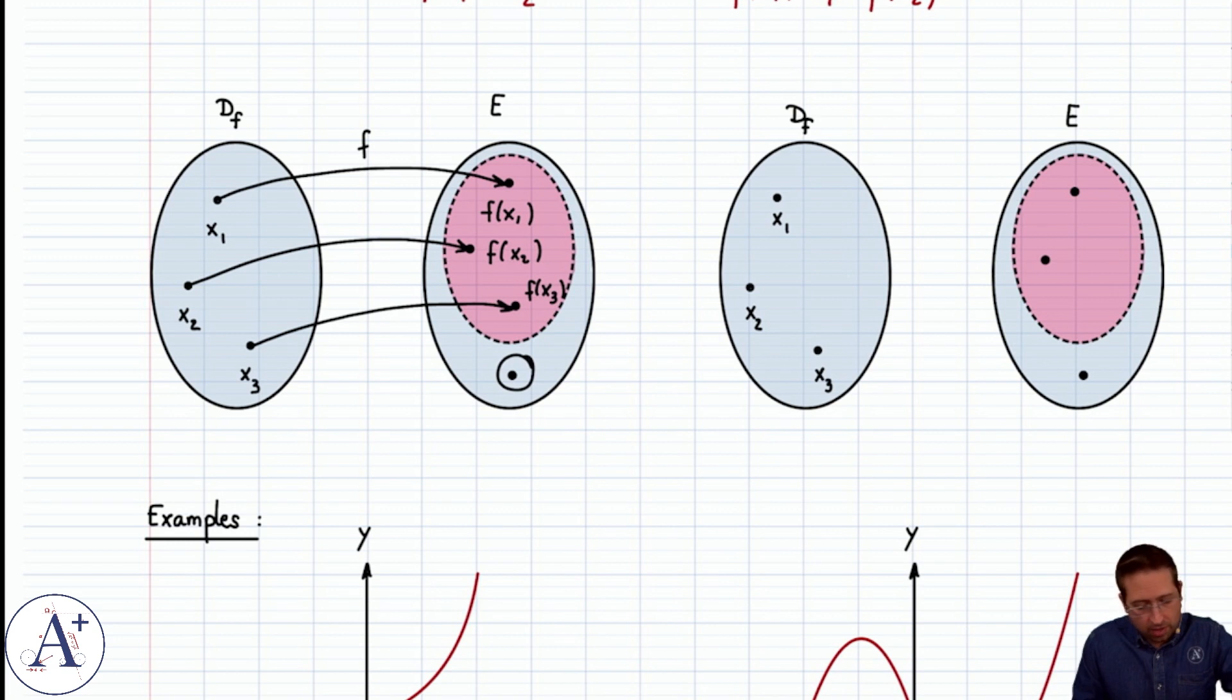Now what about this guy? Well, nothing wrong there, that's an element of the codomain, and we see that each element of the codomain can have at most one pre-image under f. This one just doesn't happen to have a pre-image under f. So this satisfies the definition of an injective function.